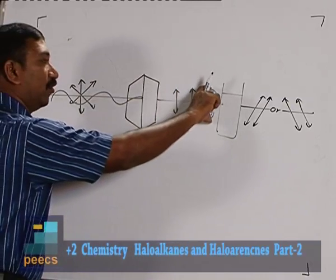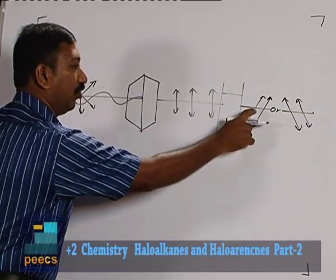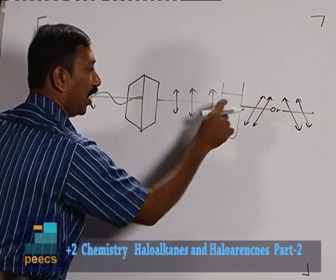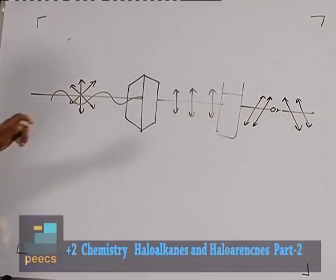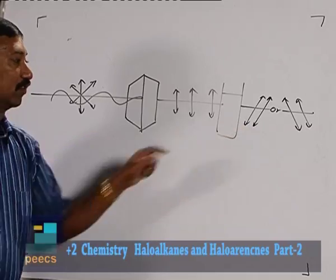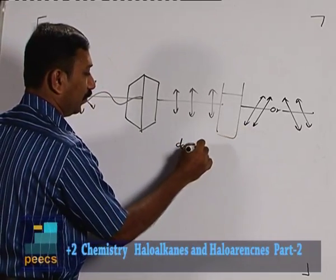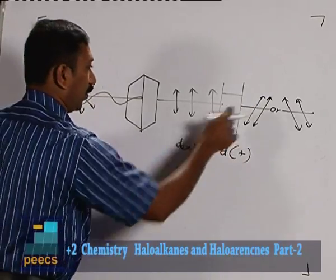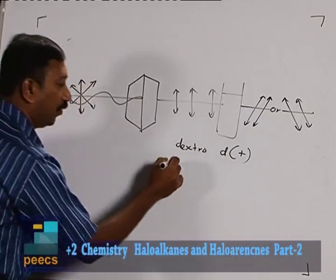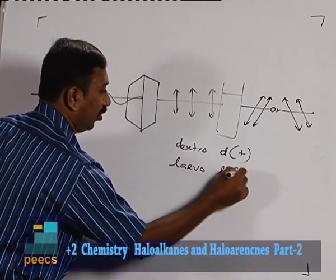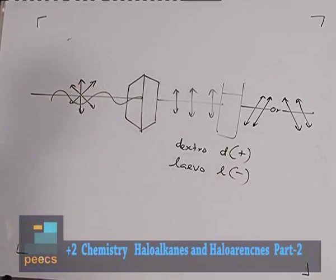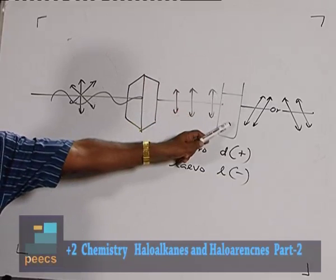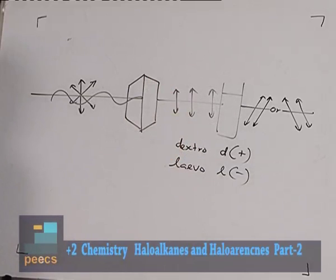When this plane polarized light is passed through an organic solution, the plane of vibration of the plane polarized light rotates either towards right or towards left. If it is rotating towards right, the compound is known as dextro, represented by small d or a positive sign. If the rotation is towards left, this property is called optical activity.